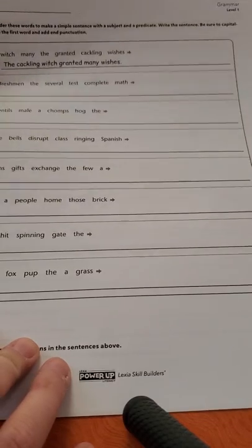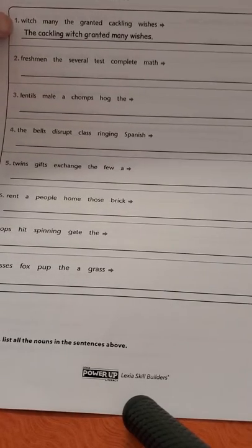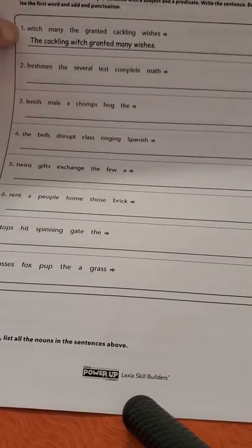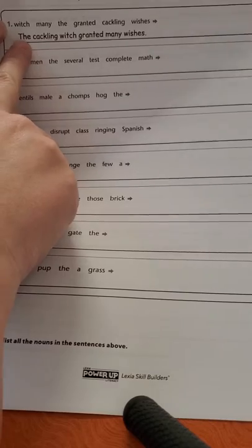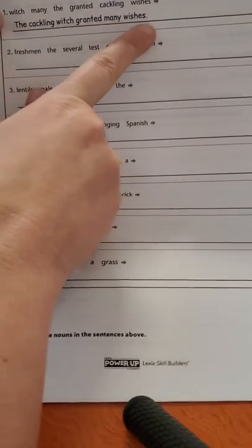All right, so they've done the first one for us. Number one had the words, which many the granted cackling wishes. So they switched it around and they capitalized the, the cackling witch granted many wishes and they added a period.